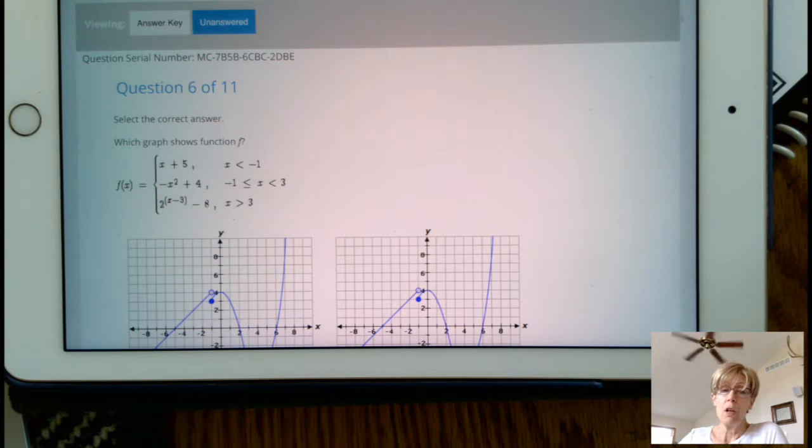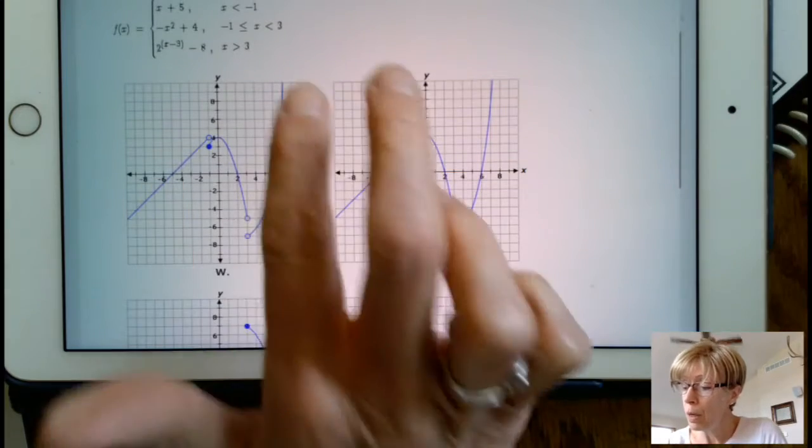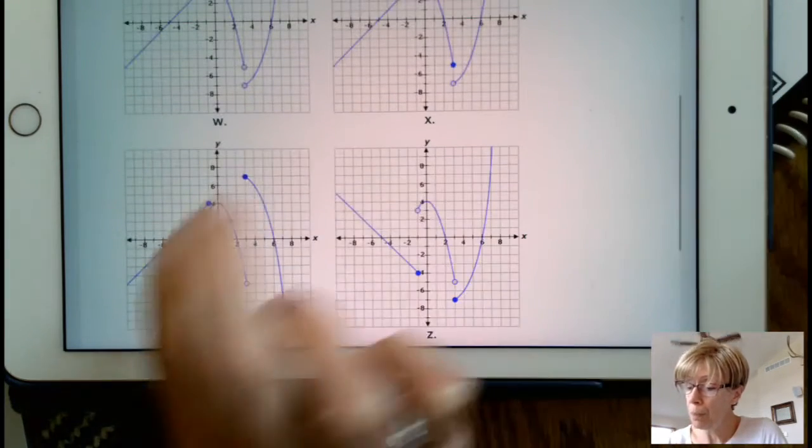And we are going uphill on 3 out of the 4, but not this one. So this choice is not one of our choices.